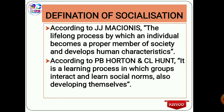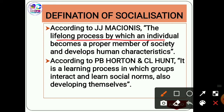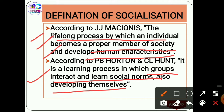There are two definitions: one is given by J. MacKenzie and another given by P.B. Horton and C.L. Hunt. You don't need to learn which definition is given by which person. From the first definition, the basic points are that it is a lifelong process in which an individual becomes a proper member of society and develops human characteristics. From the second definition, it is a process in which groups interact and learn the norms and develop themselves.